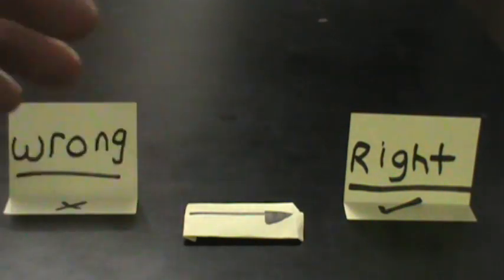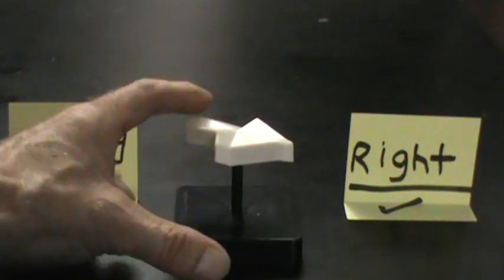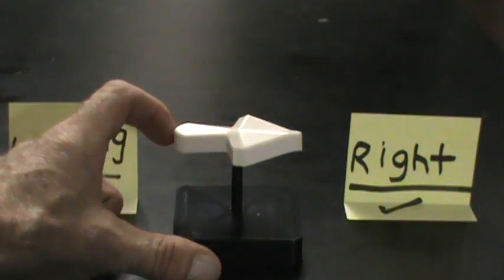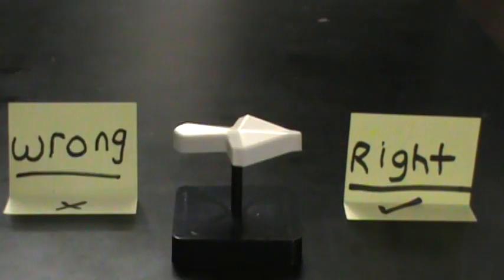Alright, so now we're going to introduce a morality compass pointer. You can clearly see that the arrow points to the right,